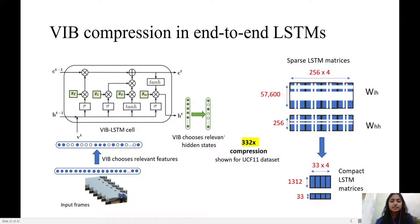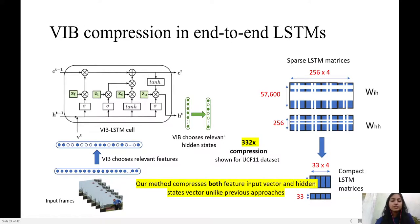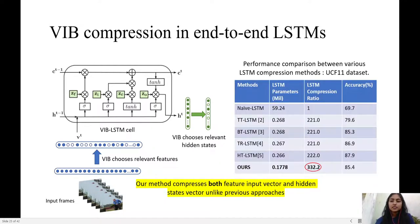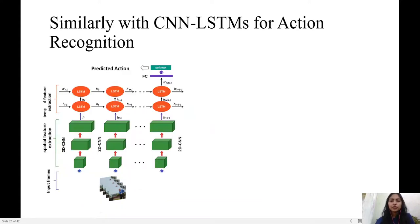Shown for UCF-11 dataset, this leads to 332x compression. Our method compresses both feature input vector and hidden state vectors, unlike previous tensor decomposition methods. Thus, our method gives the highest compression ratio along with comparable accuracy.